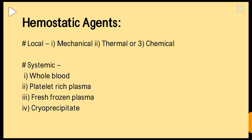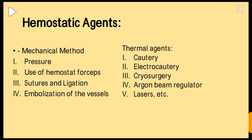Hemostatic agents can be classified into mechanical, thermal, or chemical — both local and systemic. Systemic hemostatic agents include whole blood, platelets, whole plasma, fresh frozen plasma, and cryoprecipitate. Local mechanical methods include pressure, use of a hemostat forceps or sutures and ligation, and ligation of the bleeding vessels.